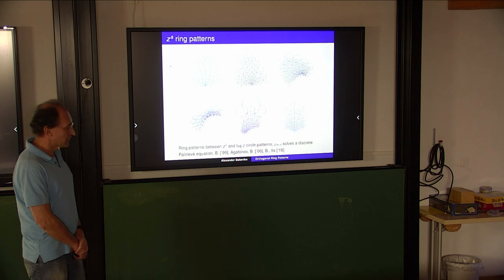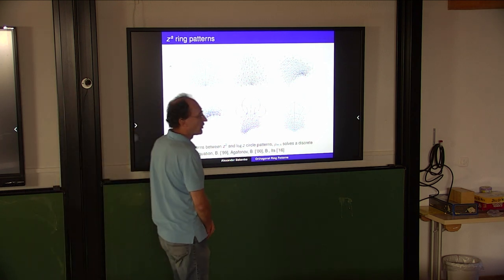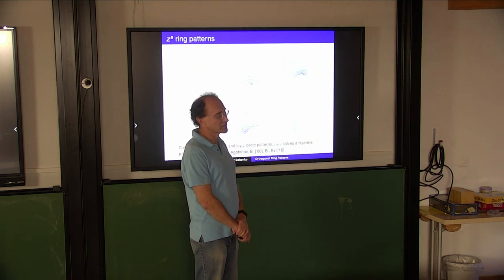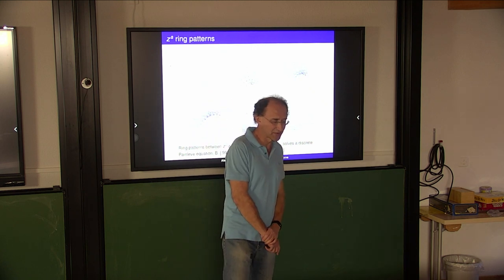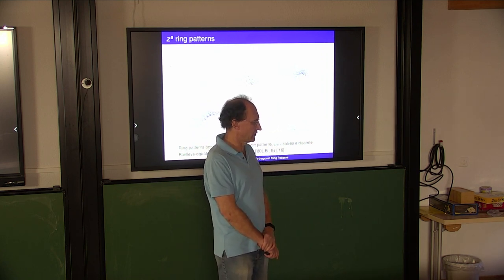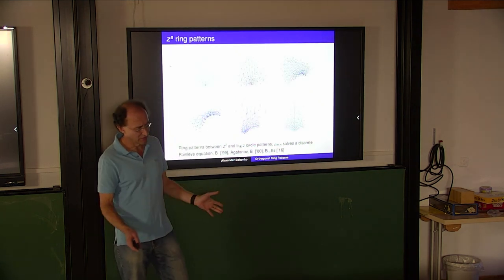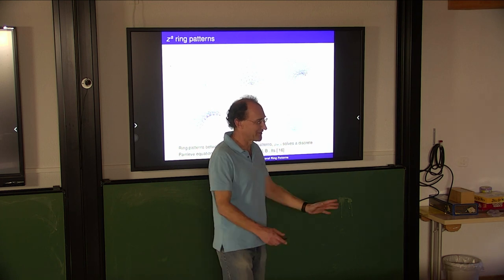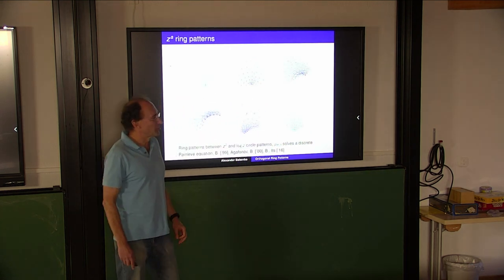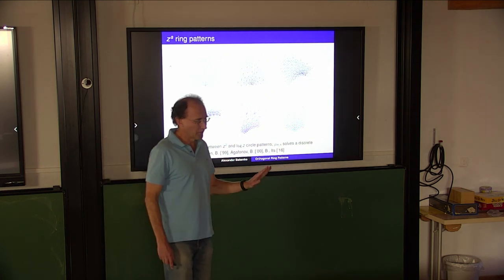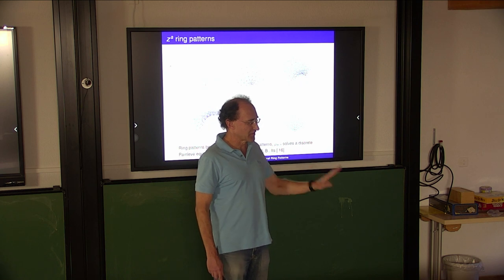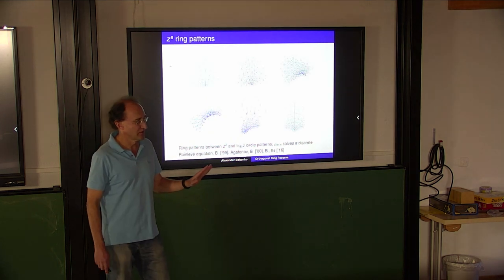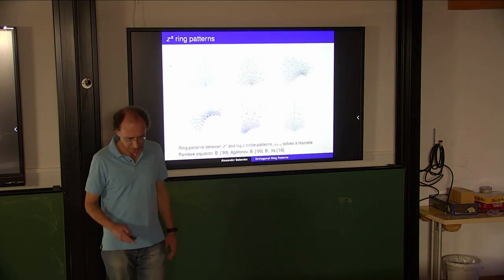What did Schramm do? He introduced orthogonal circle patterns and described the equations. He was not very much interested in integrable systems, but it was clear that the system is integrable. The important point was to prove that in this way you can approximate conformal maps, and he derived the corresponding convergence results.